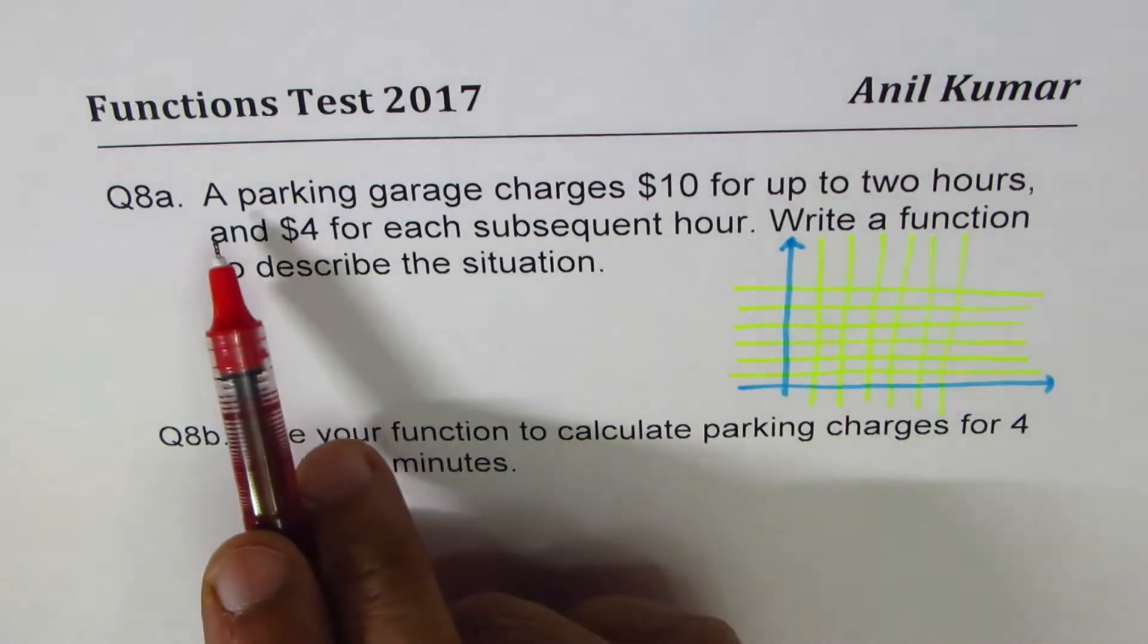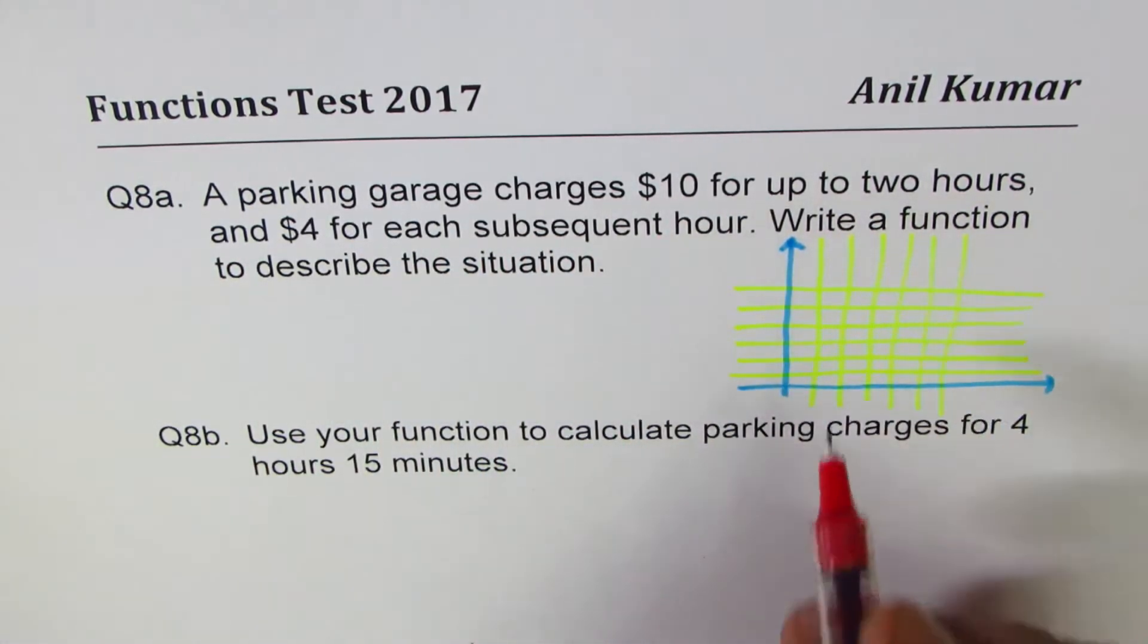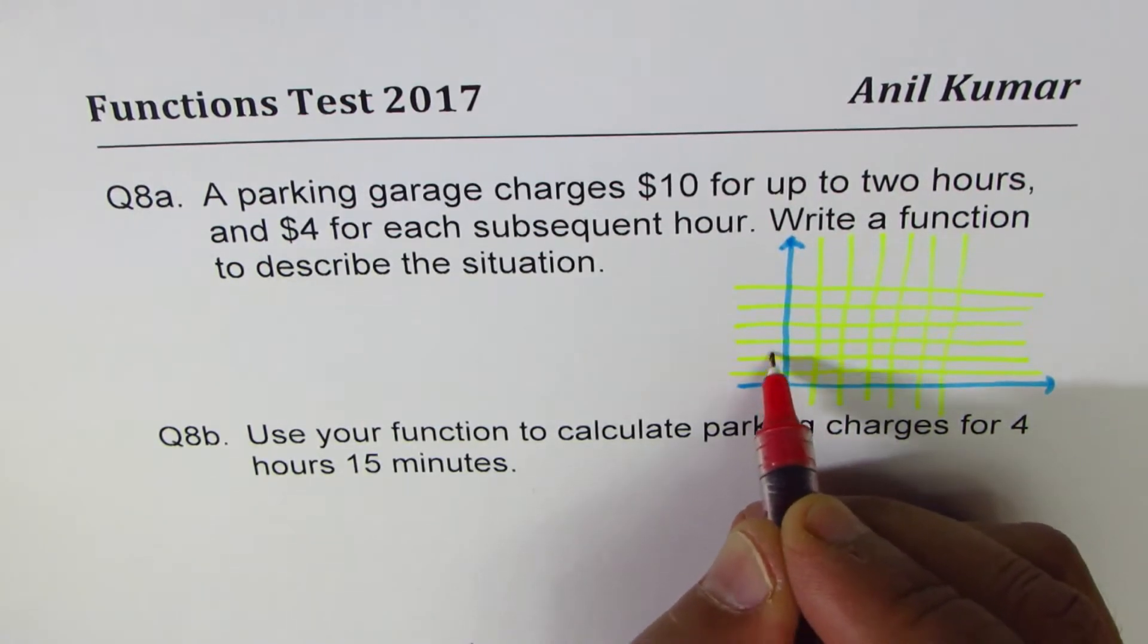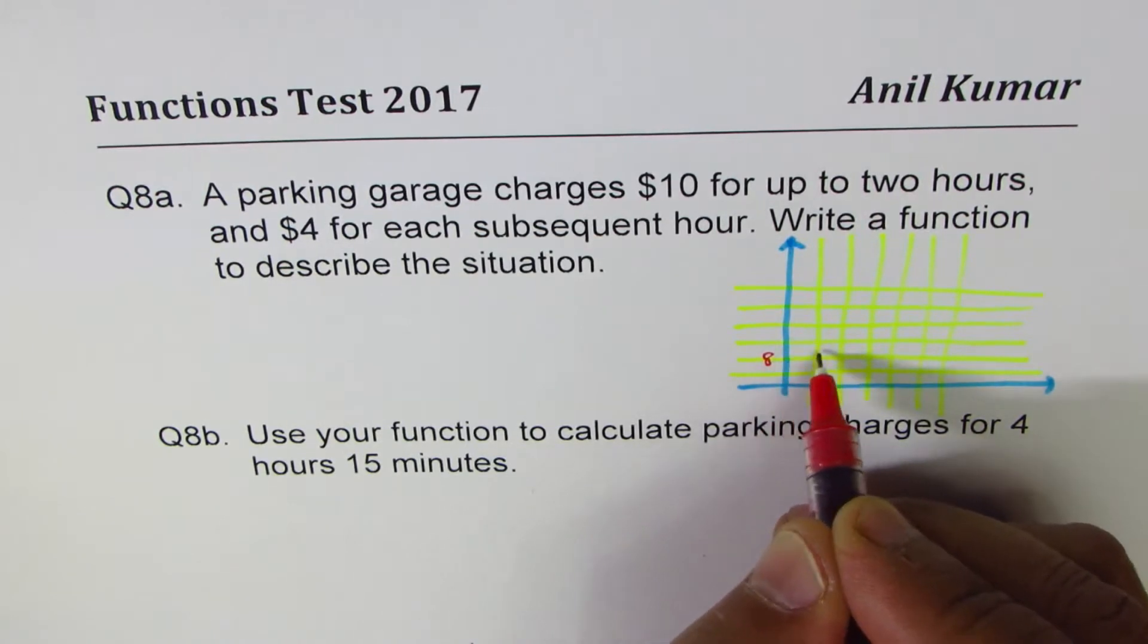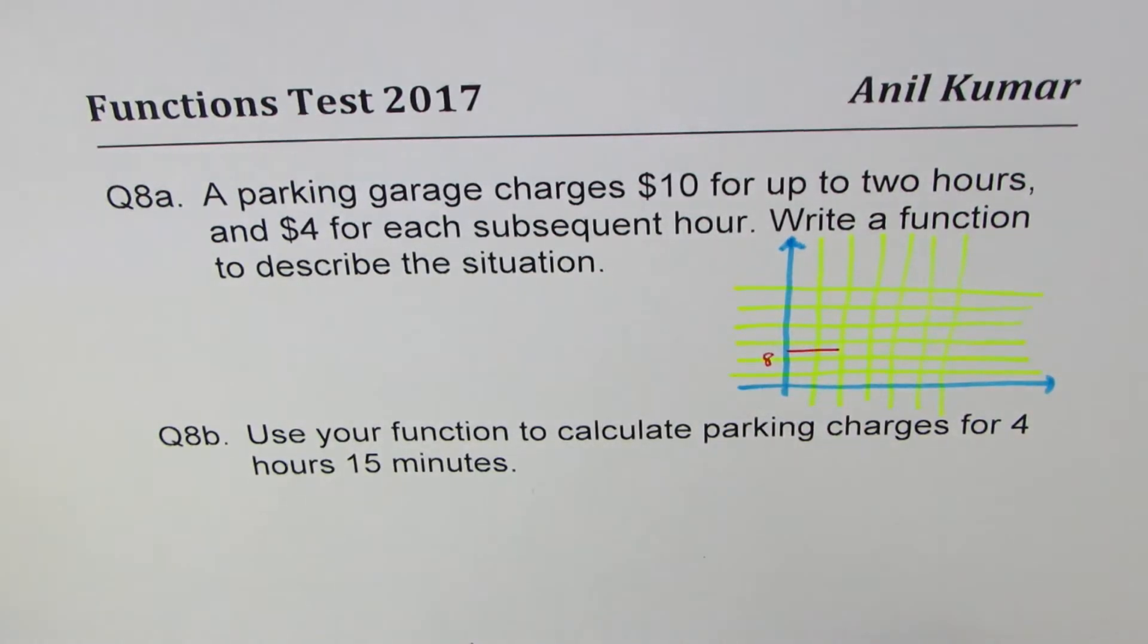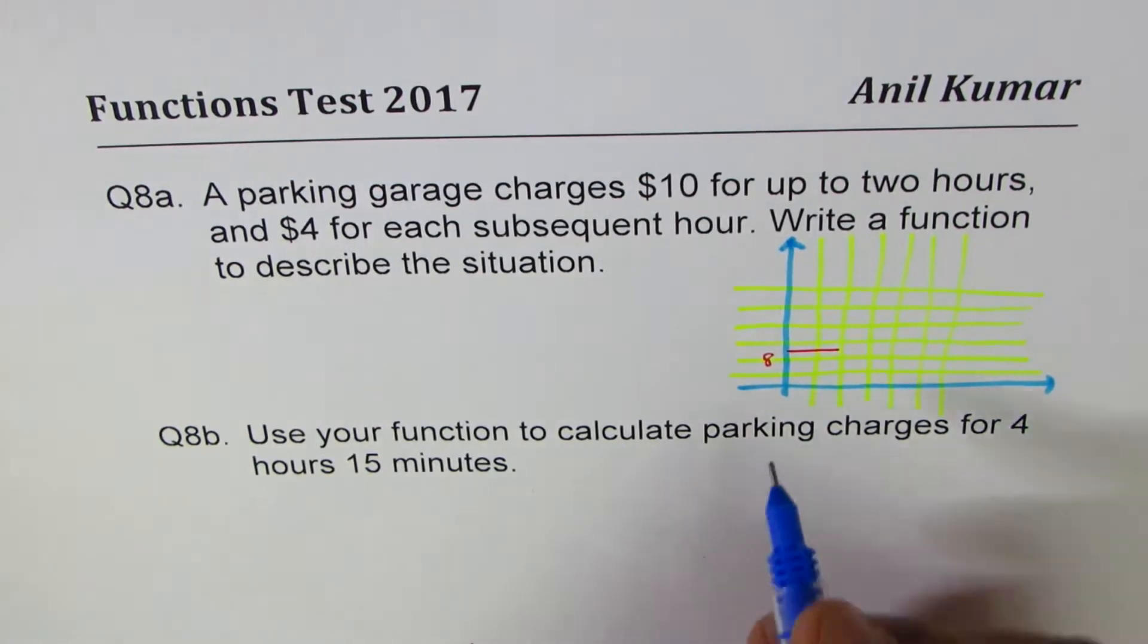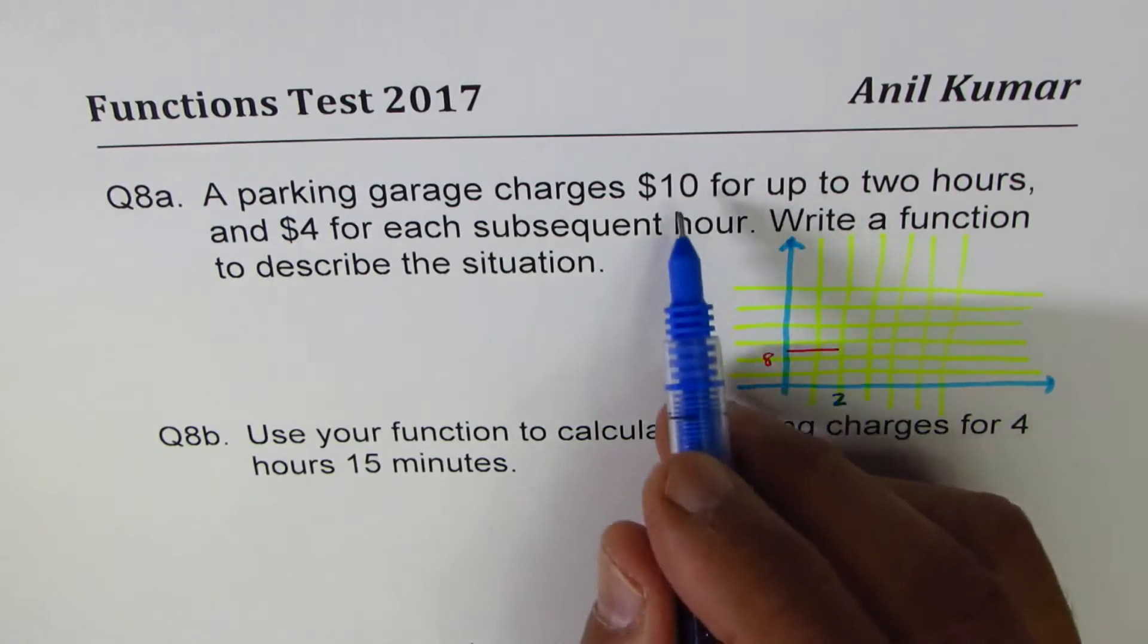Now it says the parking garage charges $10 for up to two hours. So this is each unit is four, so this is eight, that becomes 12. So 10 is kind of like this. So up to two hours, that is $10. They will charge you $10.